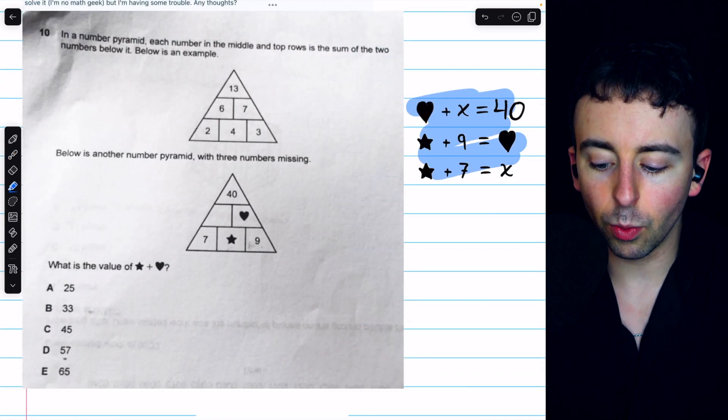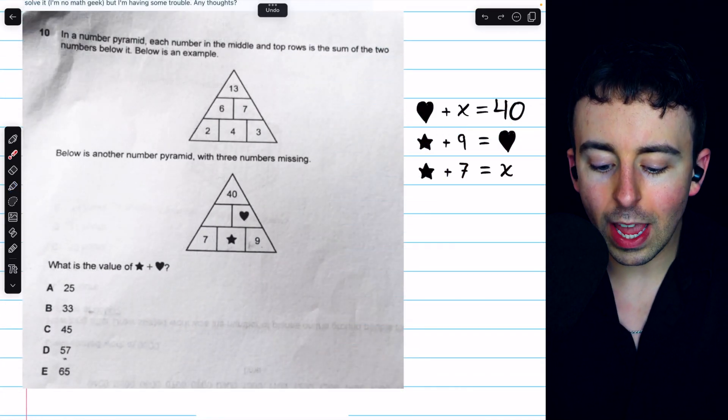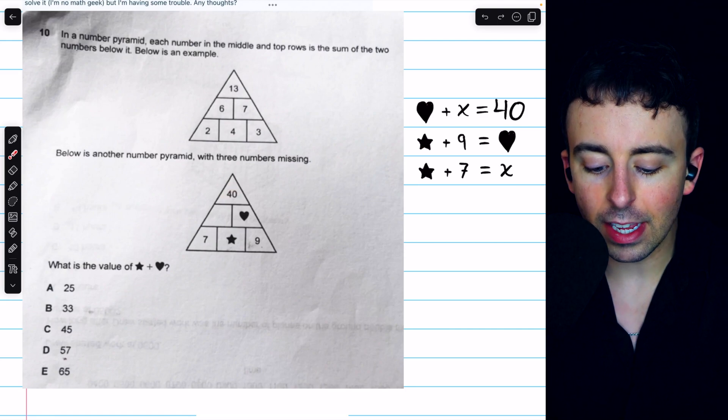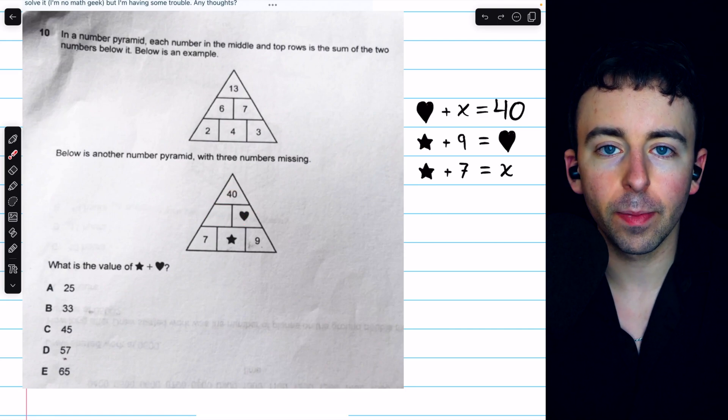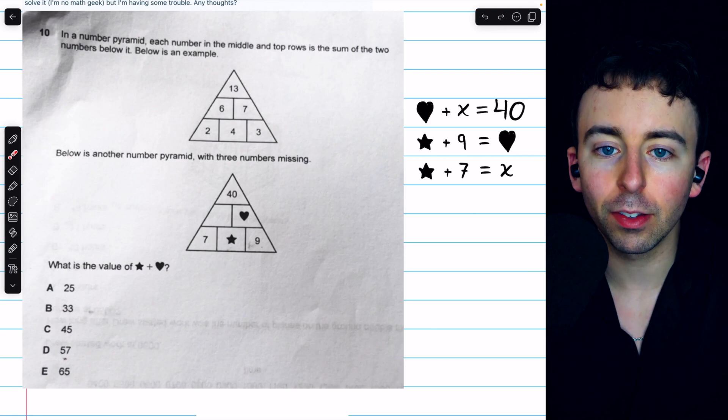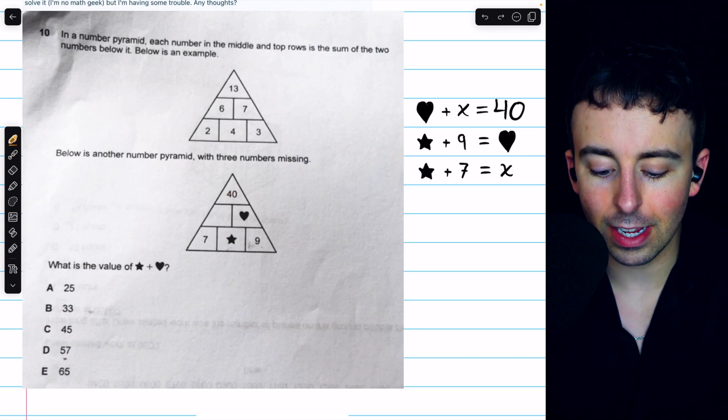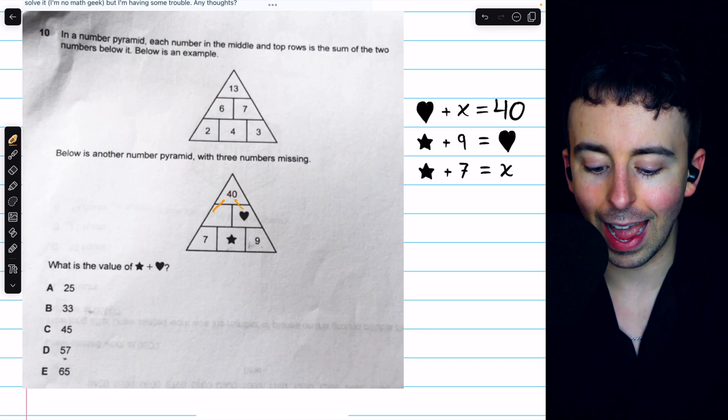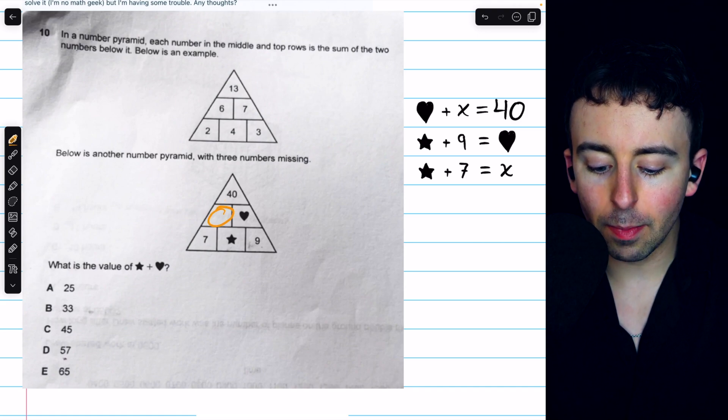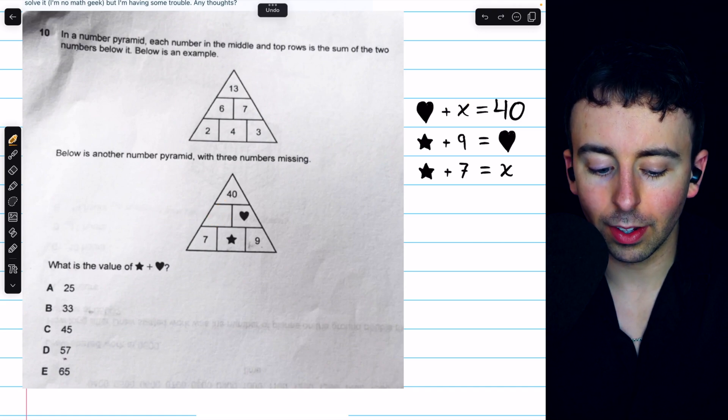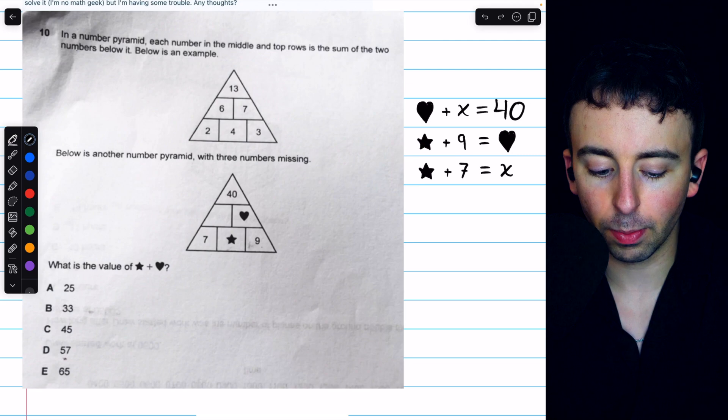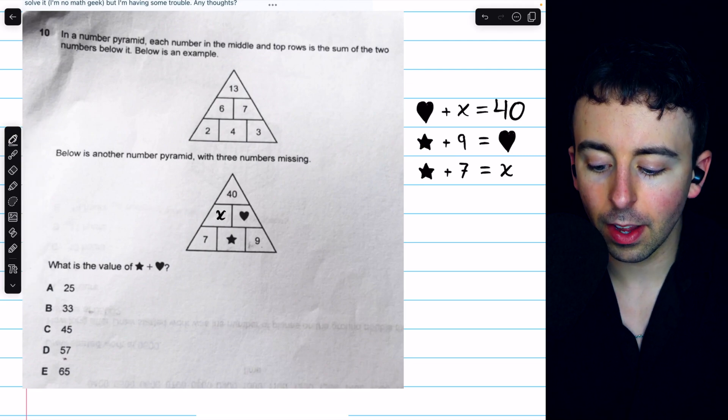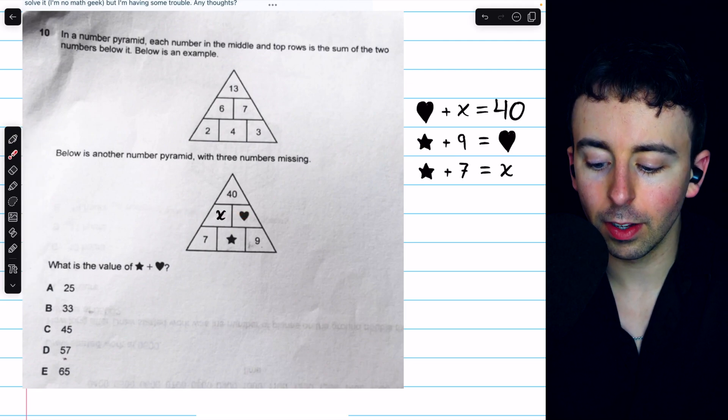Beginning with everything we know right here, we have that 40 must equal this unnamed number plus the heart. That's just how these number pyramids are defined. This number must equal these two below it added together. This unnamed number will go with the classic choice and call that x. So I'll just put a little x in that box. So 40 equals heart plus x.